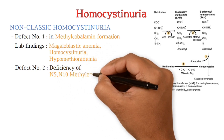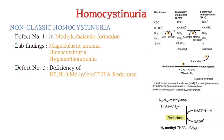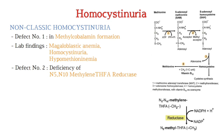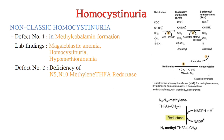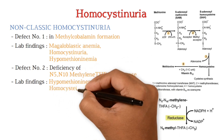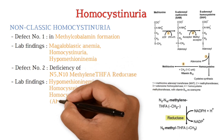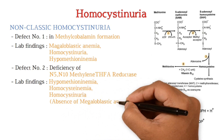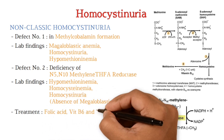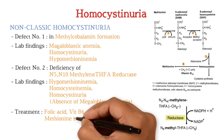Defect number two is deficiency of N5,10-methylenetetrahydrofolate reductase (MTHFR) enzyme. This enzyme reduces N5,10-methylenetetrahydrofolate to N5-methyltetrahydrofolate, whose methyl group is needed for remethylation of homocysteine to methionine. Lab findings include hypomethioninemia and homocystinuria, but here megaloblastic anemia is absent. Treatment includes folic acid, vitamin B6, B12, methionine supplementation, and betaine, which seems to have the most beneficial effect.